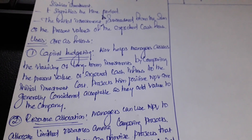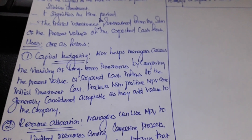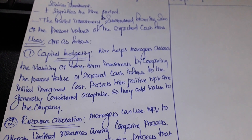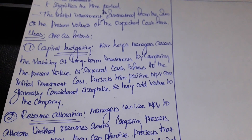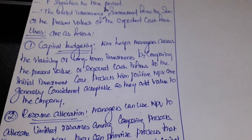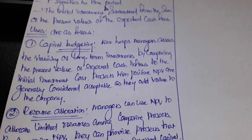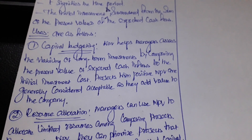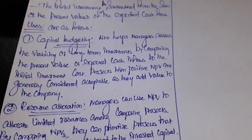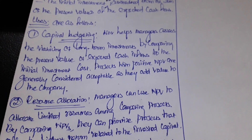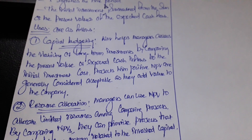The first use is in capital budgeting. NPV helps managers assess the viability of long-term investments by comparing the present value of expected cash inflows to the initial investment cost. Projects with a positive NPV are generally considered acceptable, as they add value to the company.